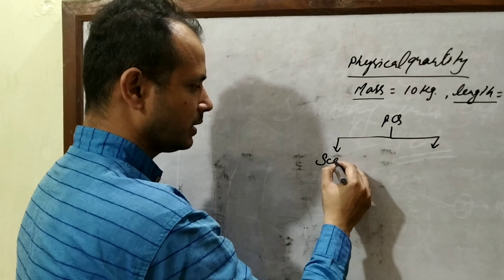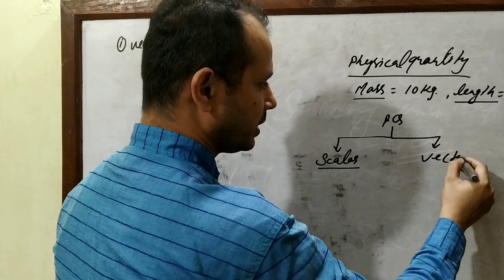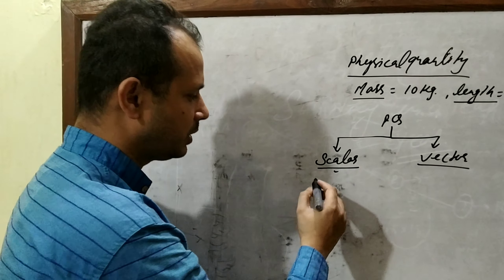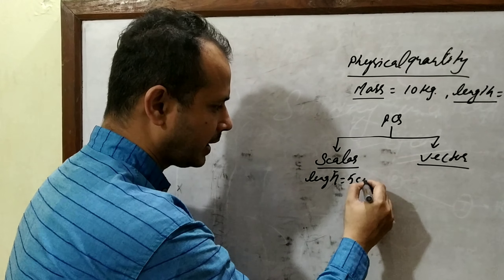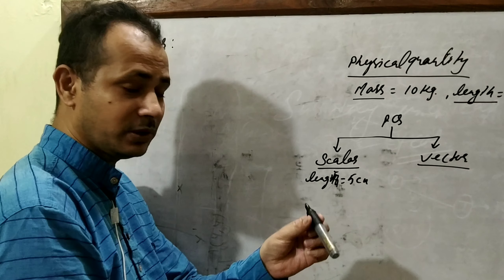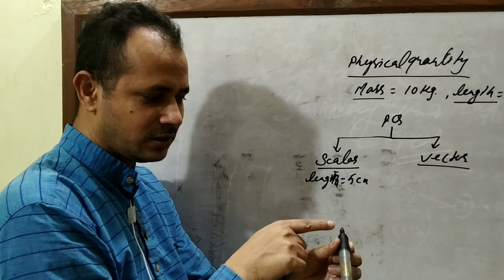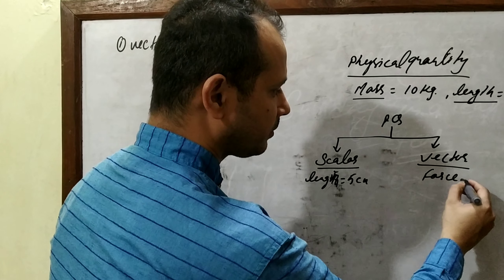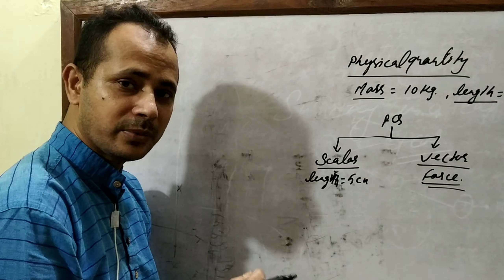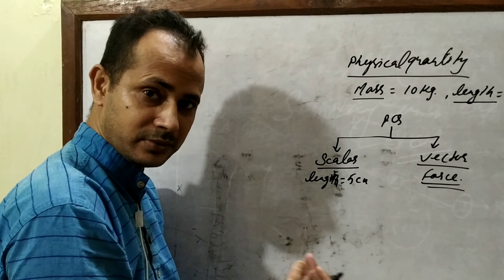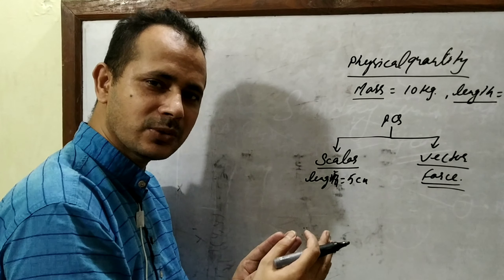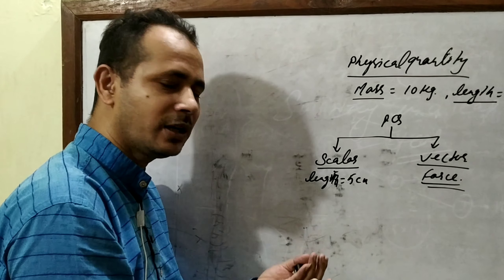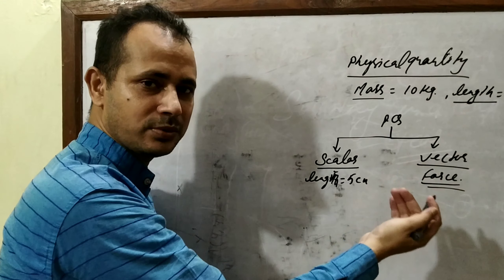The first is scalar quantity, and the other is vector quantity. Scalar quantity means a quantity which has only magnitude, not direction. For example, when we see length — 5 centimeters — we can say the length of this marker is 5 centimeters. We can measure from this point to this point, no problem. But when we say force, without taking the help of direction we cannot clarify the concept of force.